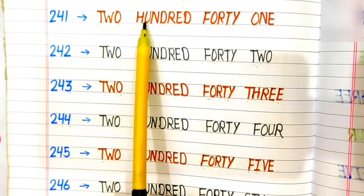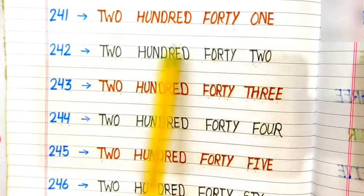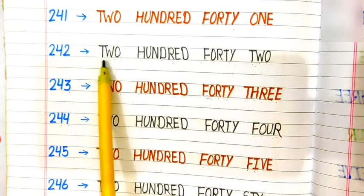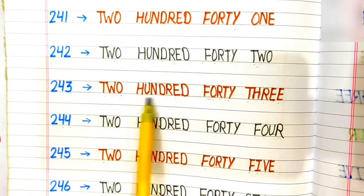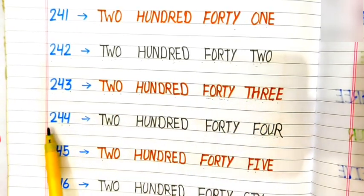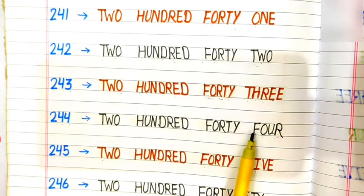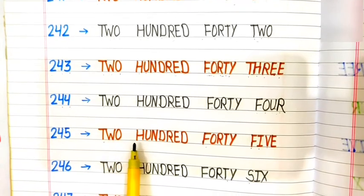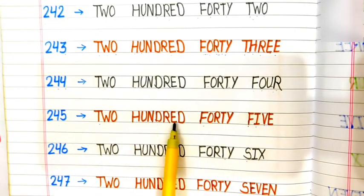241: T-W-O H-U-N-D-R-E-D F-O-R-T-Y O-N-E. 241. 242: T-W-O H-U-N-D-R-E-D F-O-R-T-Y T-W-O. 242. 243: T-W-O H-U-N-D-R-E-D F-O-R-T-Y T-H-R-E-E. 243. 244: T-W-O H-U-N-D-R-E-D F-O-R-T-Y F-O-U-R. 244. 245: T-W-O H-U-N-D-R-E-D F-O-R-T-Y F-I-V-E. 245.